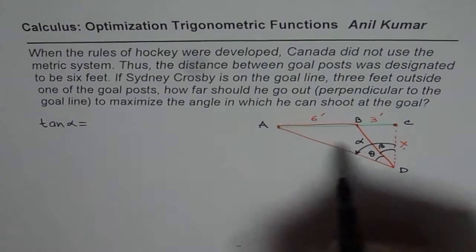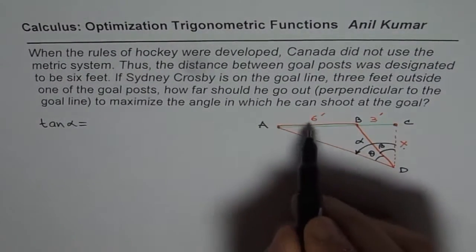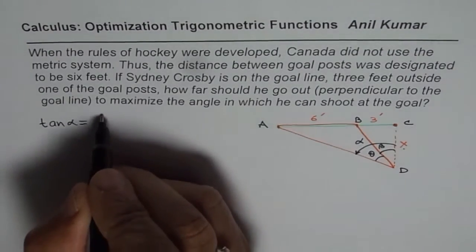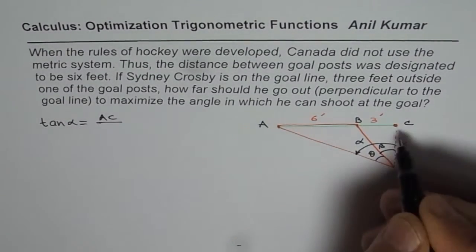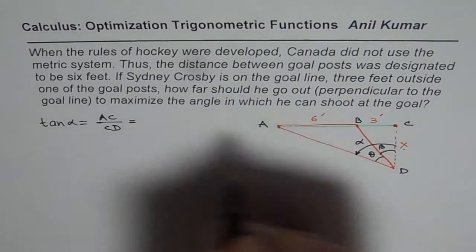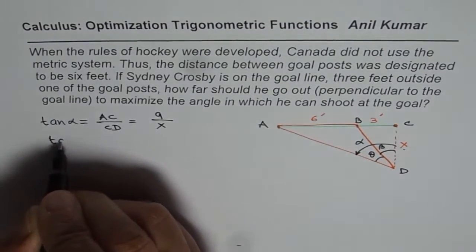So tan of alpha, this angle, will be opposite over adjacent. That means 6 plus 3, which is 9. The whole length is 9, so which is AC over CD. That is tan of alpha over CD, which is indeed equals to 9 over x.